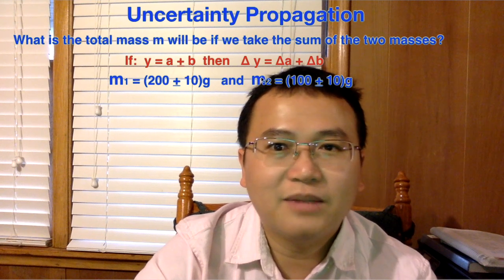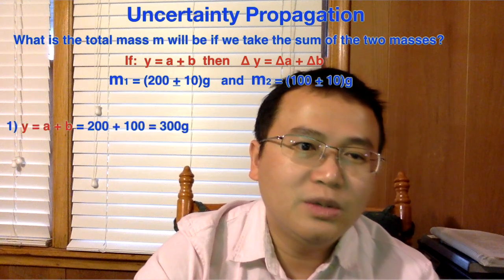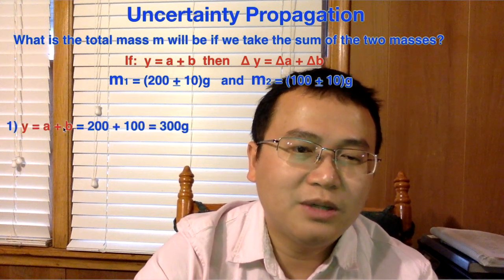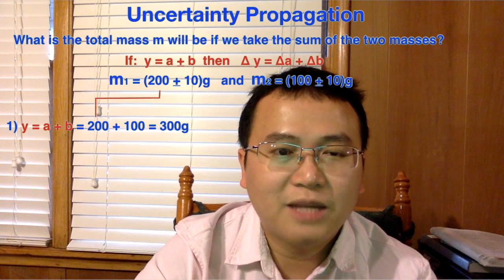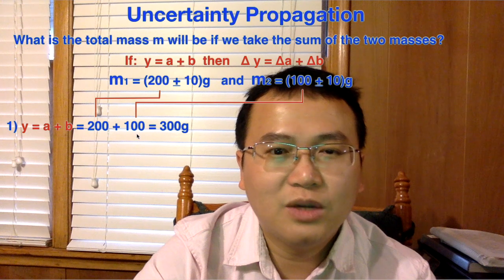So this A stands for M1 and this B stands for M2. So first thing we need to do, we need to add A plus B without uncertainty. So we take 200 for mass 1 and then 100 for mass 2 and add them together, which is 300 grams.